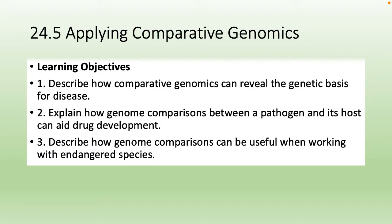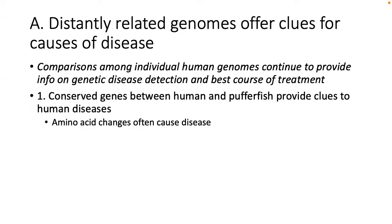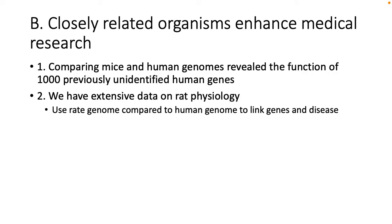The final section: applying comparative genomics. We'll talk about the genetic basis for disease, pathogens, drug development, and endangered species. Distantly related genomes offer clues for causes of disease. Comparing individual human genomes gives us information about genetic disease detection and the best course of treatment. Conserved genes between humans and pufferfish provide clues to human diseases — an amino acid change can bring about disease. Comparing mice and human genomes revealed the function of a thousand previously unidentified human genes. We also use the rat genome compared to the human genome to link genes and disease.